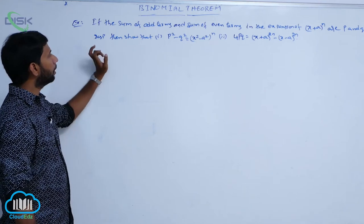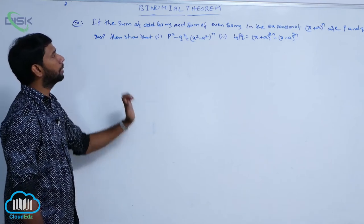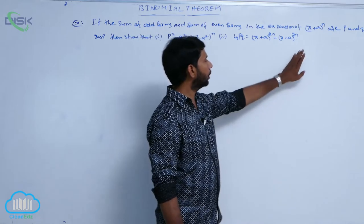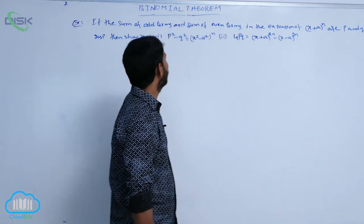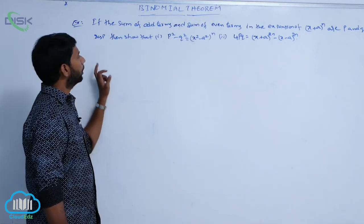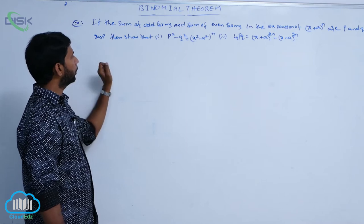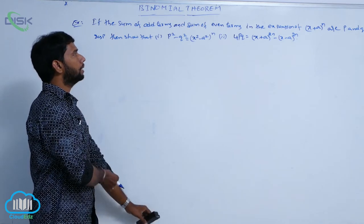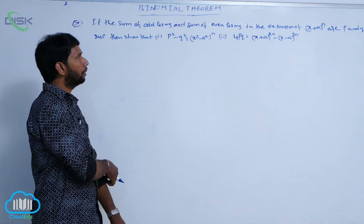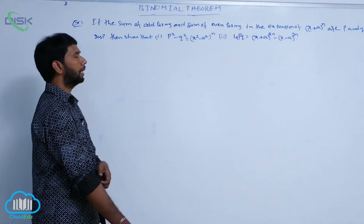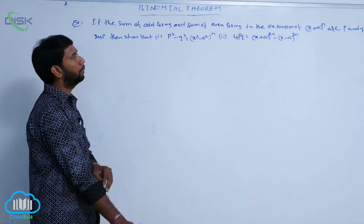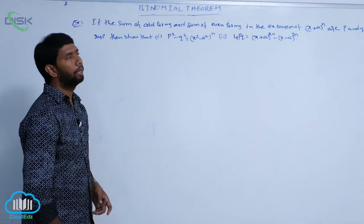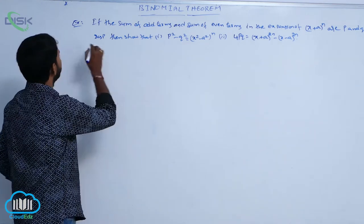Another example: given the sum of odd terms and sum of even terms in the expansion of (x + a) whole power n are p and q respectively, then show that p squared minus q squared is equal to (x squared minus a squared) whole power n, and 4pq is equal to (x + a) whole power 2n minus (x minus a) whole power 2n.